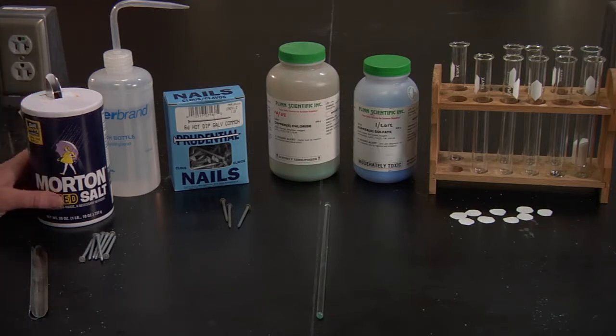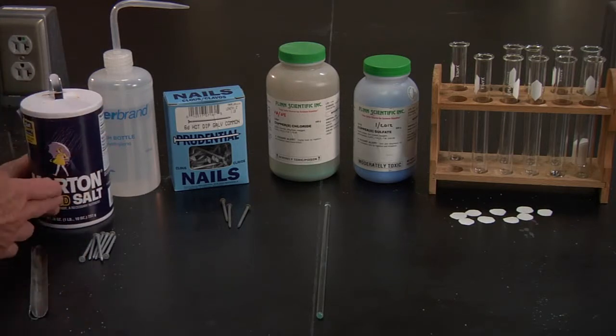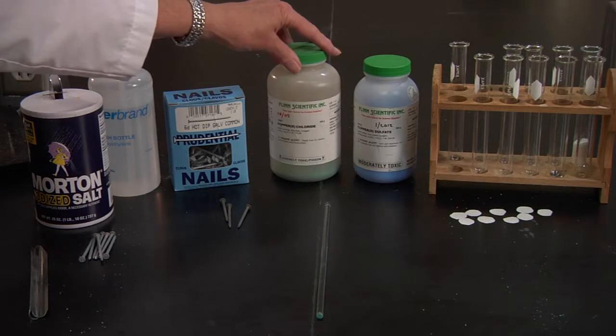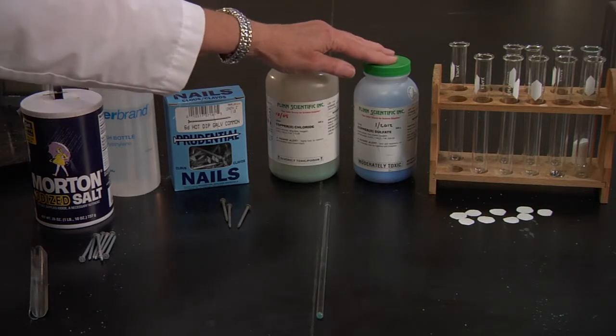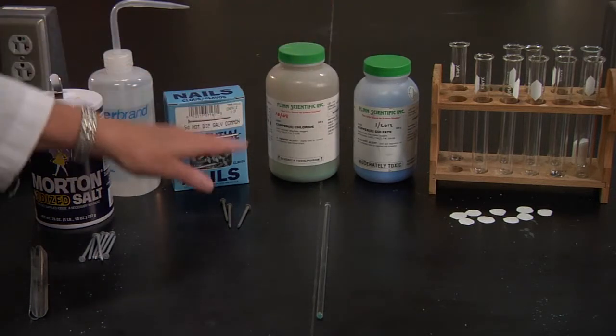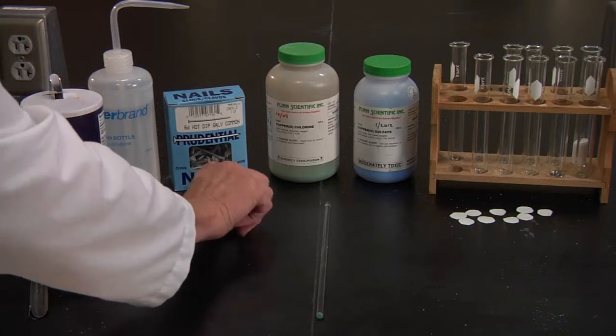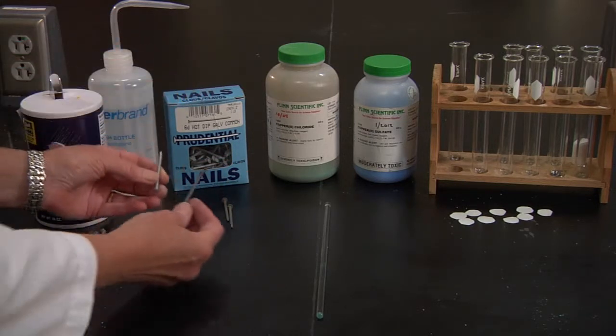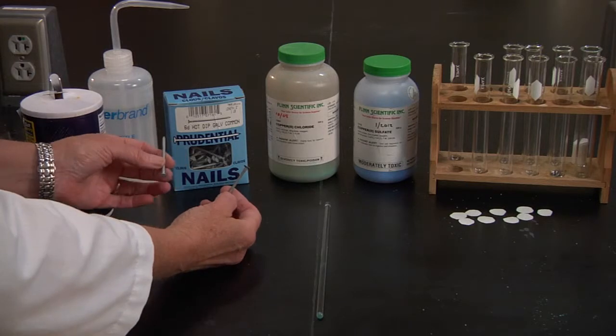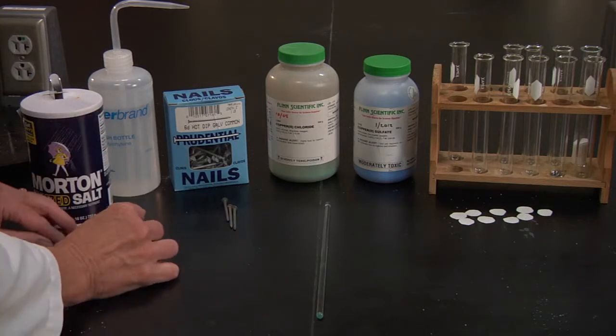What you're going to do is take sodium chloride, copper chloride or copper sulfate, and an iron nail, either one that's been galvanized or one that is not galvanized.